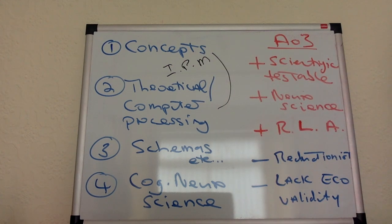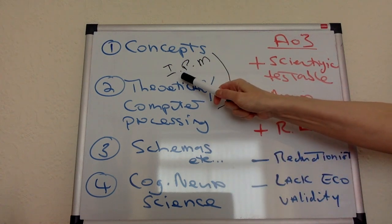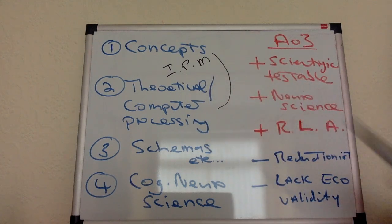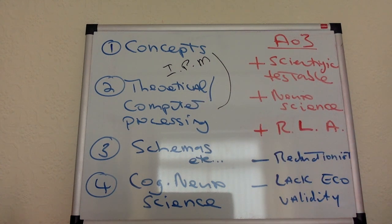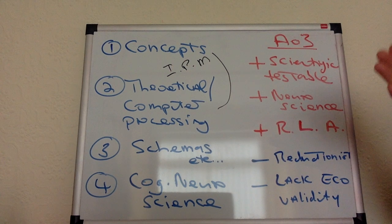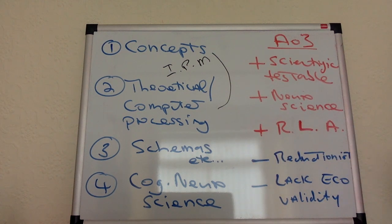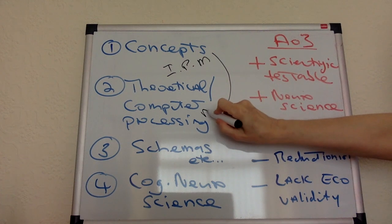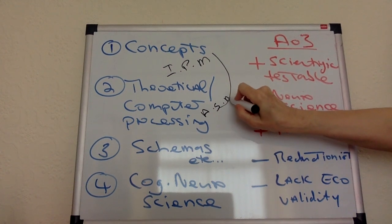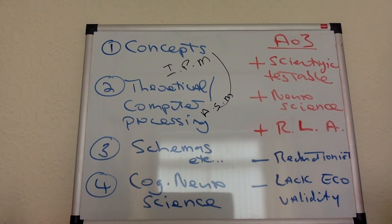The principles of the model — it's an information processing model and it's very theoretical. It's based on the idea that our minds work like a computer and we can visualise it stage by stage. A very good example to bring in here is the Atkinson-Shiffrin model of memory, which is known of course as the multi-store model.